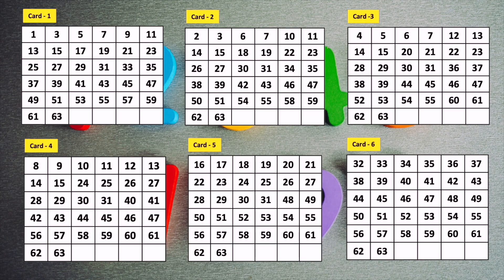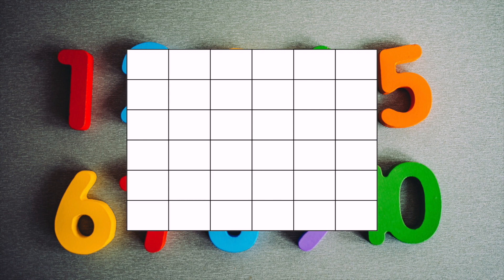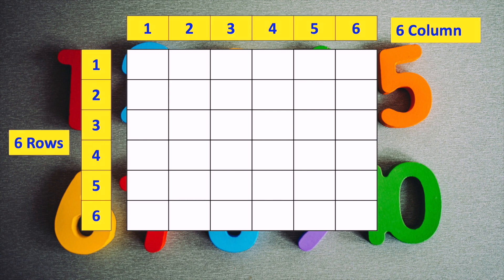We have to first prepare our 6 cards. For this, we can use paper or cardboard. Each card will have a table with 6 rows and 6 columns, which will give us 36 boxes.